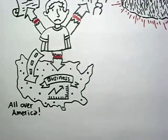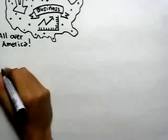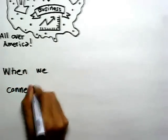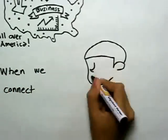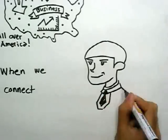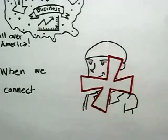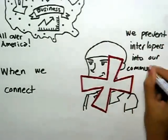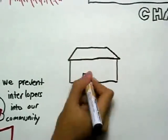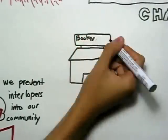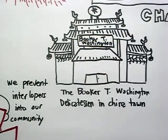When we connect, we prevent interlopers from coming into our communities and taking and destroying at will. All right, George. Try to open up the Booker T. Washington delicatessen in Chinatown and see what happens.